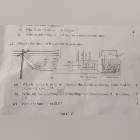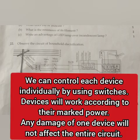Question 22: Observe the circuit of household electrification. (a) Which device is used to measure the electric energy consumed in household circuit? Answer: watt-hour meter. (b) Write any two advantages of connecting the devices in parallel in household circuit.